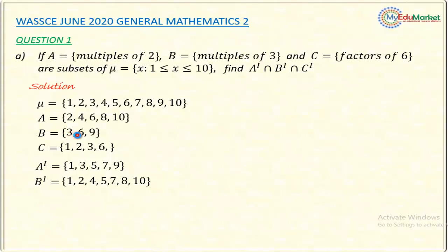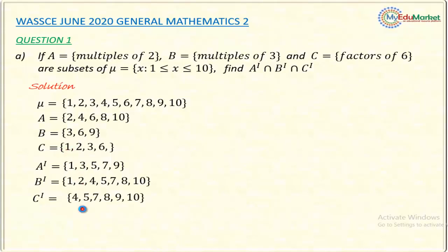Continuing with C prime or C complement, using the same concept — those elements in the universal set but not in set C. So C complement = {4, 5, 7, 8, 9, 10}. Now I have A complement, B complement, and C complement.